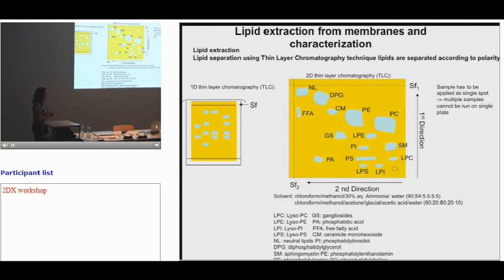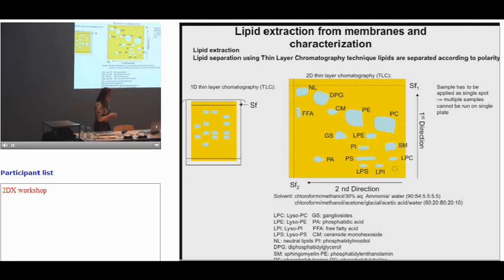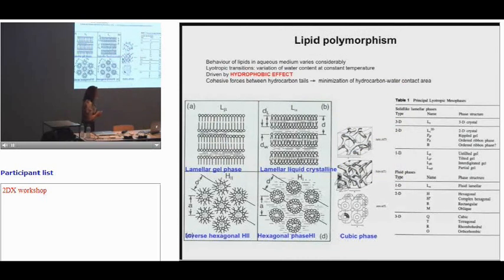To know the exact lipid composition of a biological membrane, the following protocol is used: first, extract lipids using a mixture of chloroform and ethanol; then separate the lipids by thin layer chromatography in one and two dimensions. This provides qualitative and quantitative information about the lipid and phospholipid composition of biological membranes.